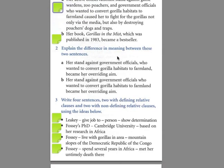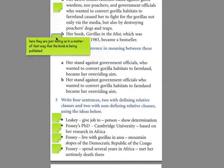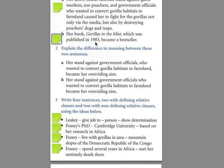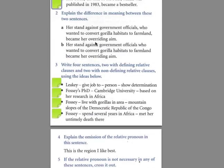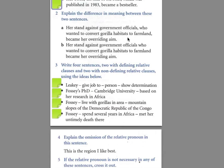And the second one: her book, Gorillas in the Mist, which was published in 1983, became a bestseller. Here we're just giving a little extra nugget of information — a matter-of-fact piece of information which is the publishing date of the book, 1983. So if we look at number two, we see one that is non-defining and one that is defining.